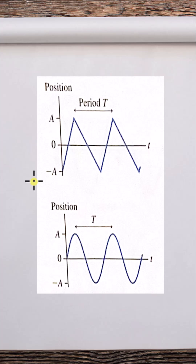Oscillations are one of the fundamental processes that take place in nature. And just FYI, vibrations and oscillations are pretty much the same idea. The source of any wave is some sort of oscillation or vibration. Furthermore, we've seen with quantum physics, particles and waves could be one and the same thing.